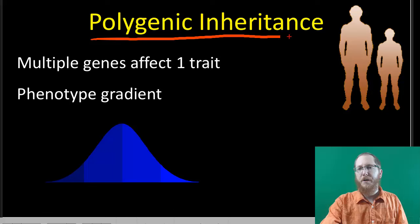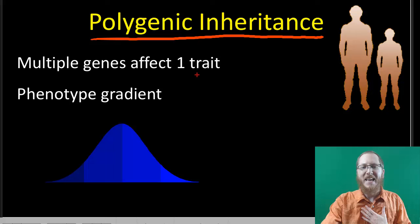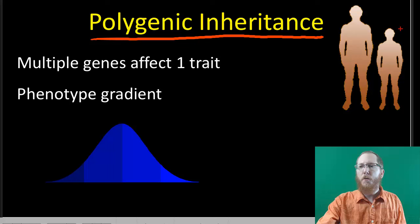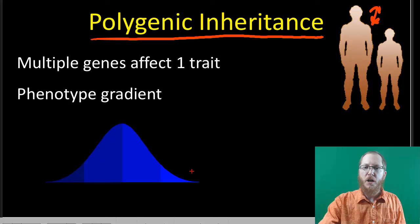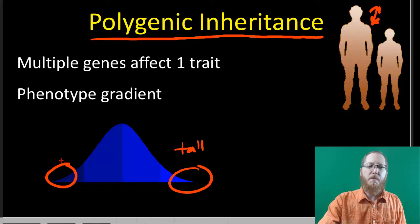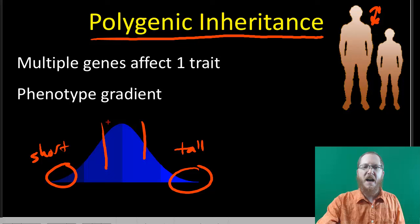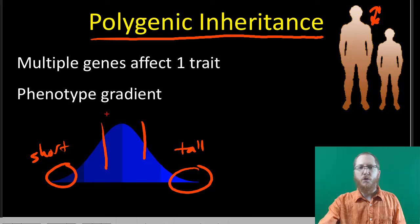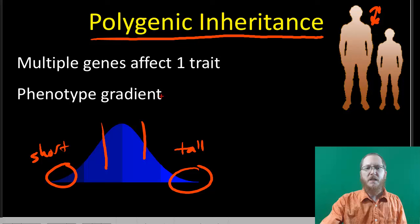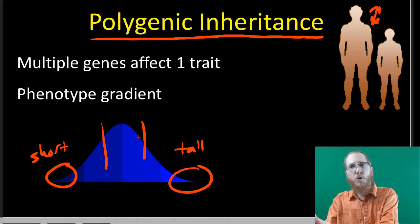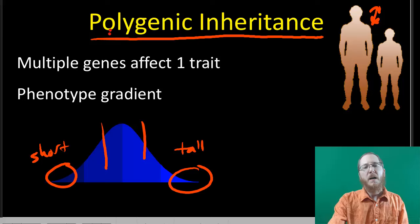Lastly, we have the idea of polygenic inheritance, which applies to many human traits. This is where many different genes all affect one phenotypic trait. If we look at human skin tone or height, it's not like we just have tall and short people — there are people everywhere in between. If you look at the phenotypes, you'll see a gradient — a bell curve — with some very tall people, some very short people, and most falling in the middle at average height. If you see this kind of gradient where you can't pin it down to two options, it's typically a polygenic trait.